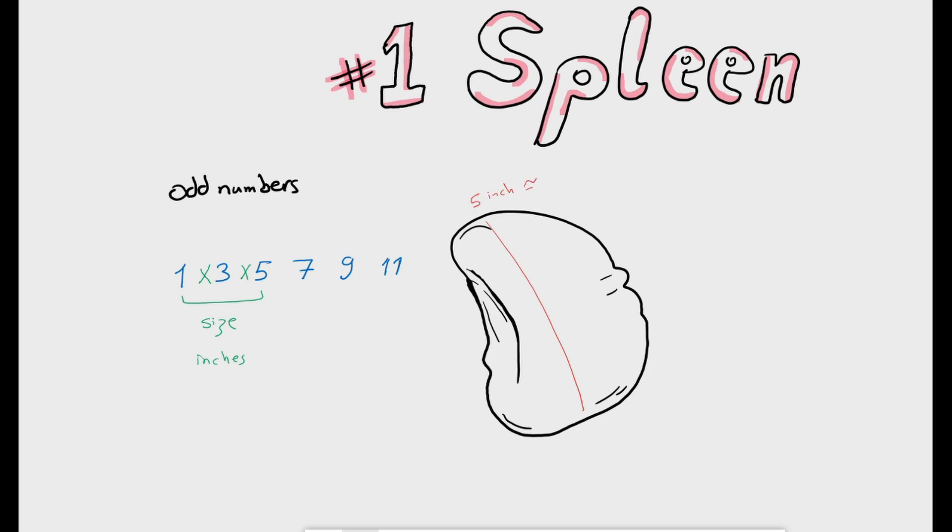The spleen is a relatively small organ, 5 inches or about 13 cm long, 7 cm wide and about 2.5 cm thick.